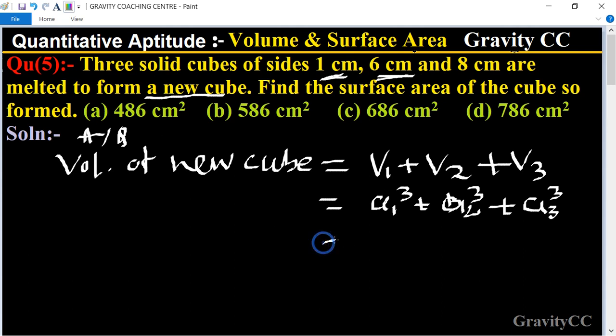So equals 1³ + 6³ + 8³, equals 1 + 216 + 512, equals 729.